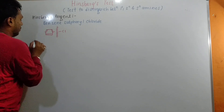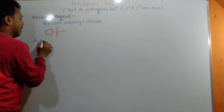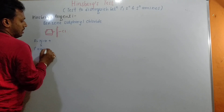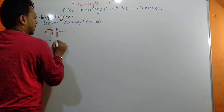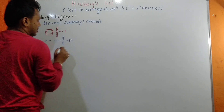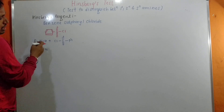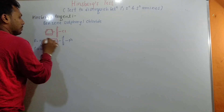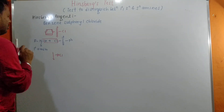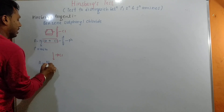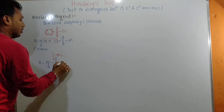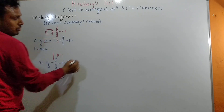For primary amine, the general representation is R-NH₂. When it reacts with benzene sulfonyl chloride — the Hinzberg reagent — the NH bond and the reagent together produce HCl as the side product. What's left behind is R-NH-S(=O)₂-Ph.